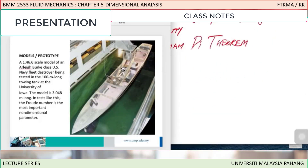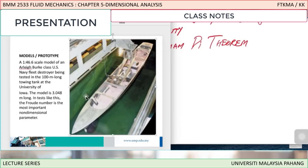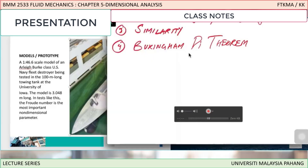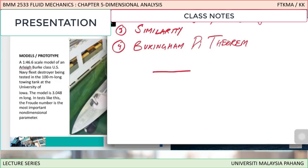This picture may seem like a toy boat in a small pool, but this is actually a model of a United States Navy fleet destroyer. The Navy destroyer has been scaled down to a very small model, placed in a testing tunnel where its properties are tested in order to predict the properties of the larger actual ship.